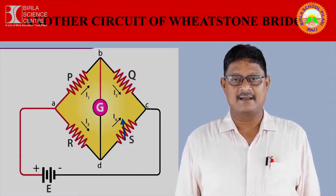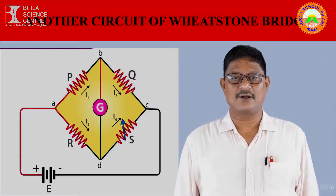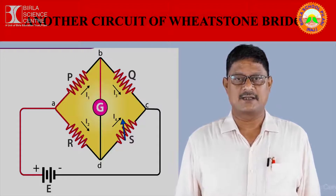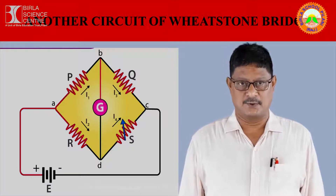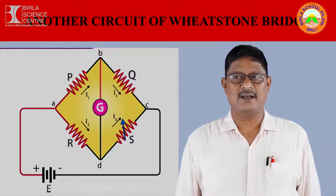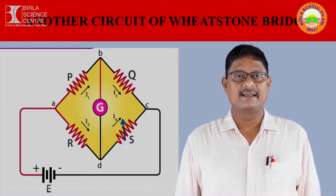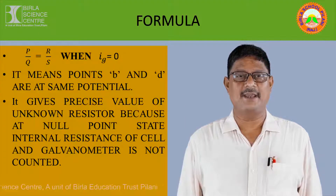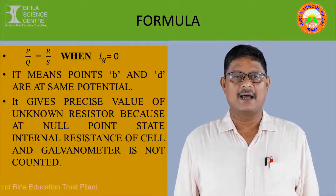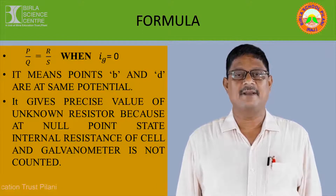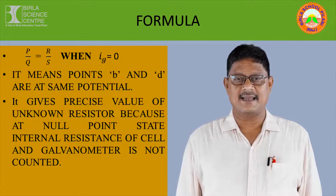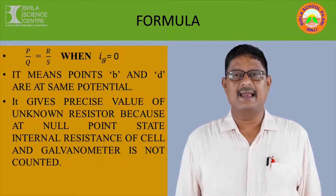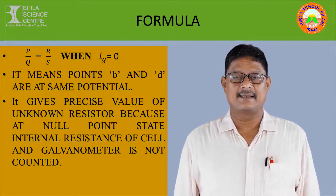Across one diagonal there is a galvanometer, and across another diagonal of the quadrilateral there is a source of EMF. When the current through the galvanometer is zero, it is popularly called the null point state. Then the ratio P by Q equals R by S. When current through the galvanometer is zero, the potentials at points B and D are at the same magnitude.